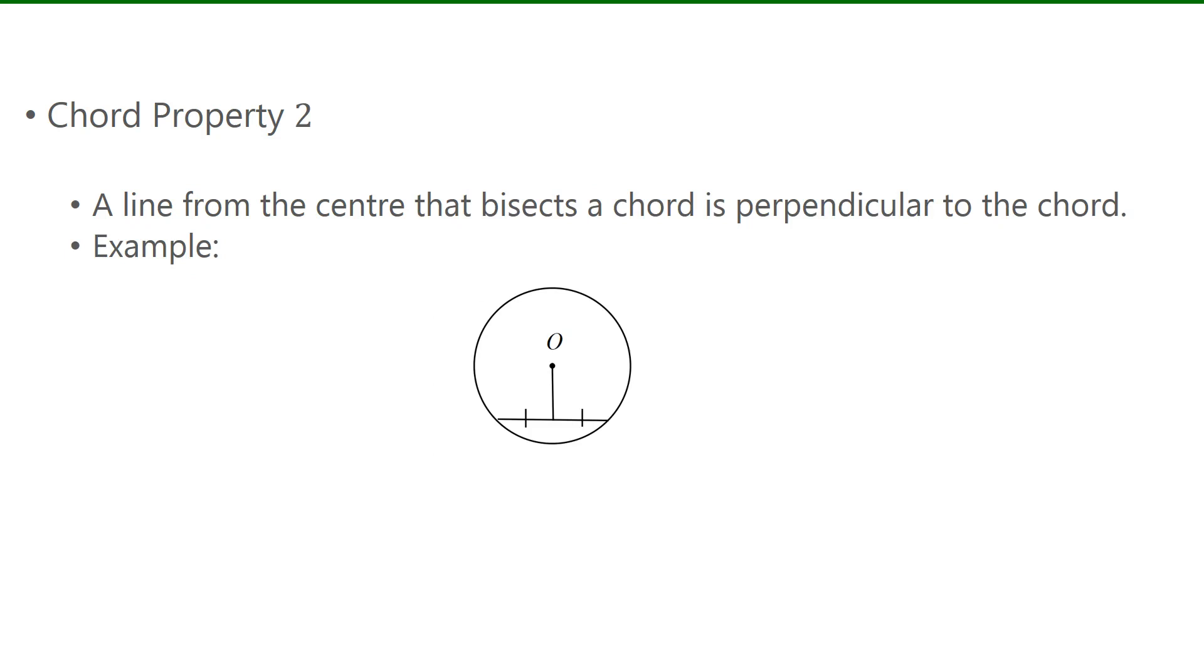Now the second chord property is essentially the opposite of the first one. If you have a line that comes from the center of the circle and it bisects the chord, then it must be perpendicular. This is the chord, and this is the line coming from the center. If that line cut this one here in half, then this must be a 90 degree angle.